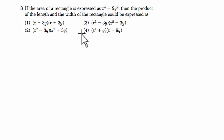Let's start by reading the question. It says that the area of a rectangle is expressed by x to the 4th minus 9y squared. And the product of the length and the width of the rectangle could be expressed as which of the following?